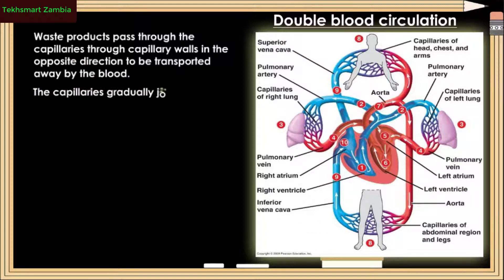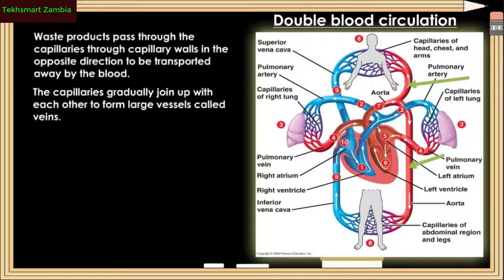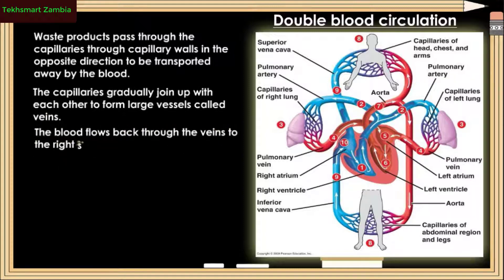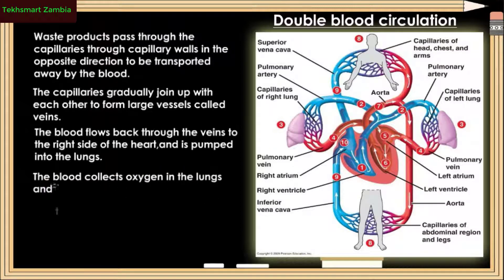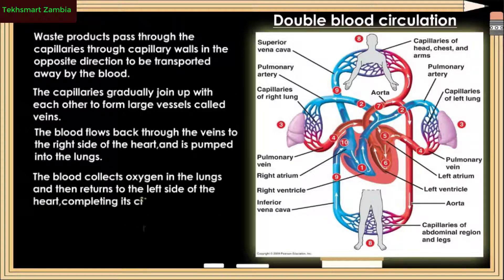The capillaries gradually join up with each other to form larger vessels called veins. The blood flows back through the veins to the right side of the heart and is pumped into the lungs, where it collects oxygen and then returns to the left side of the heart, completing its circuit.